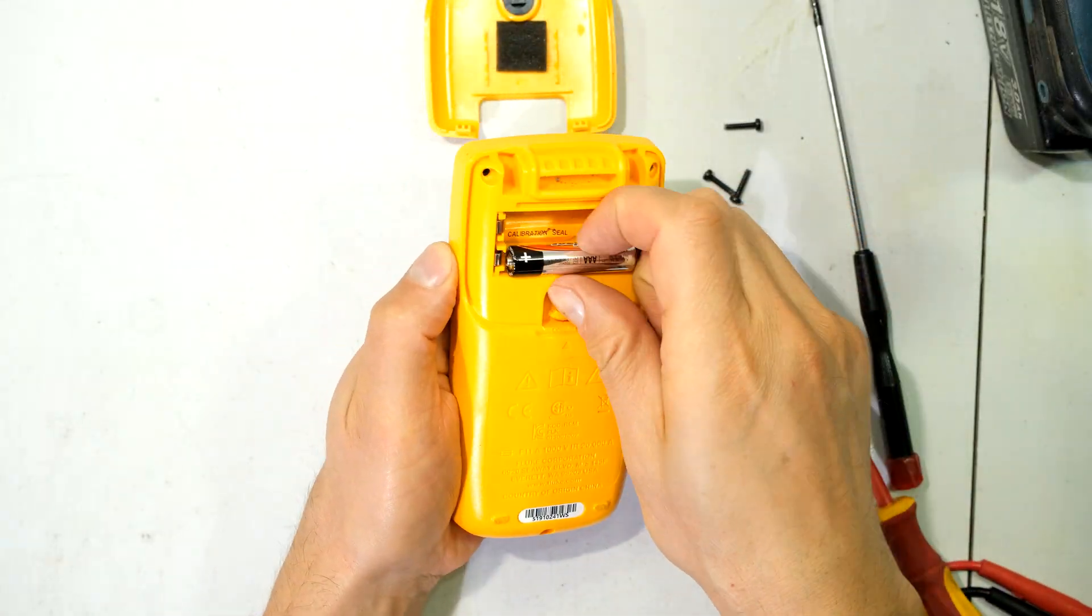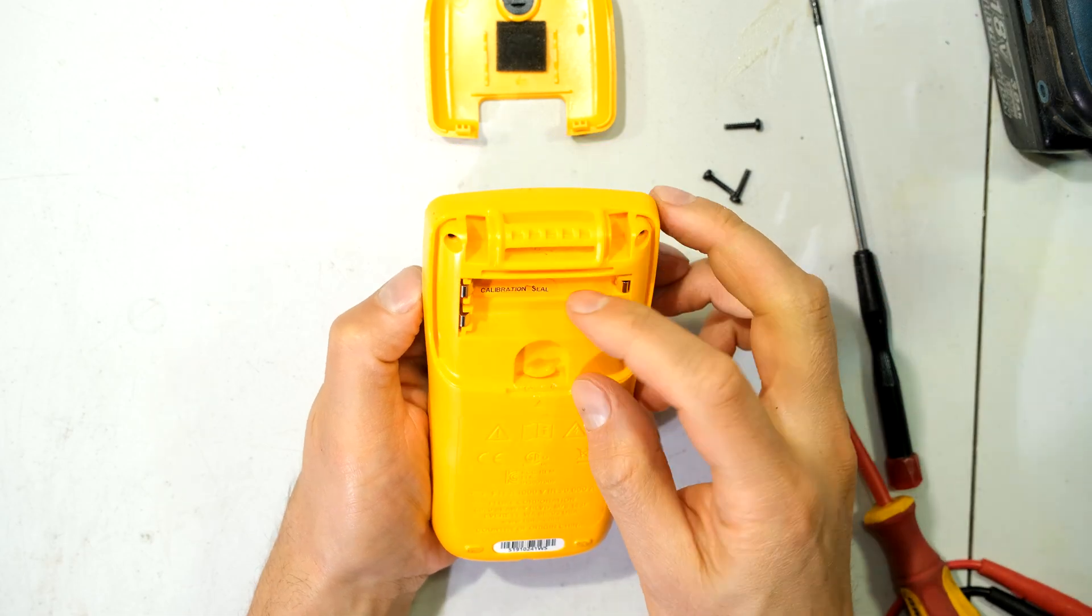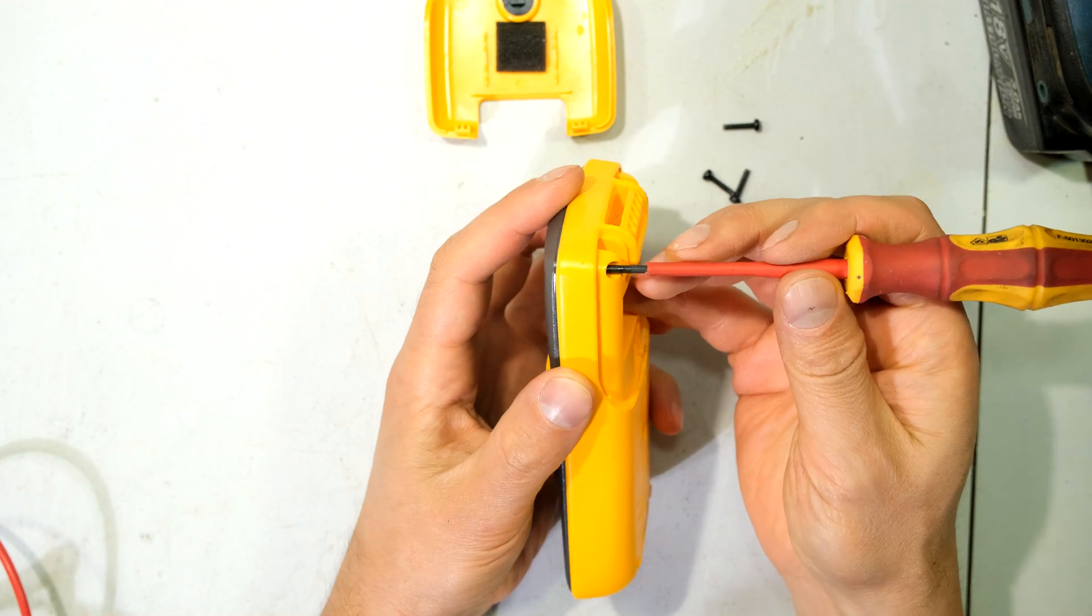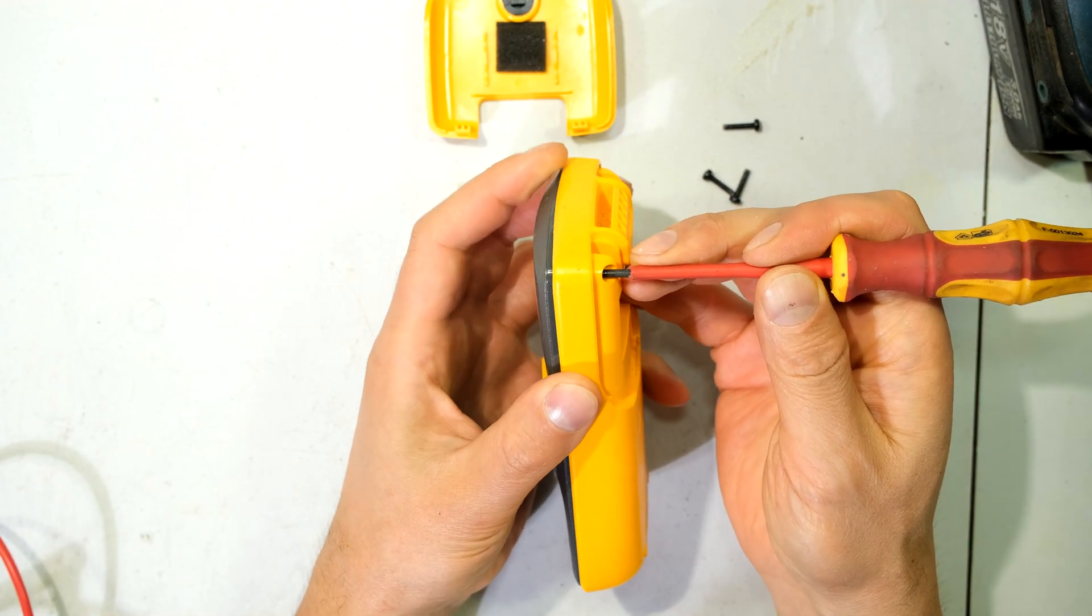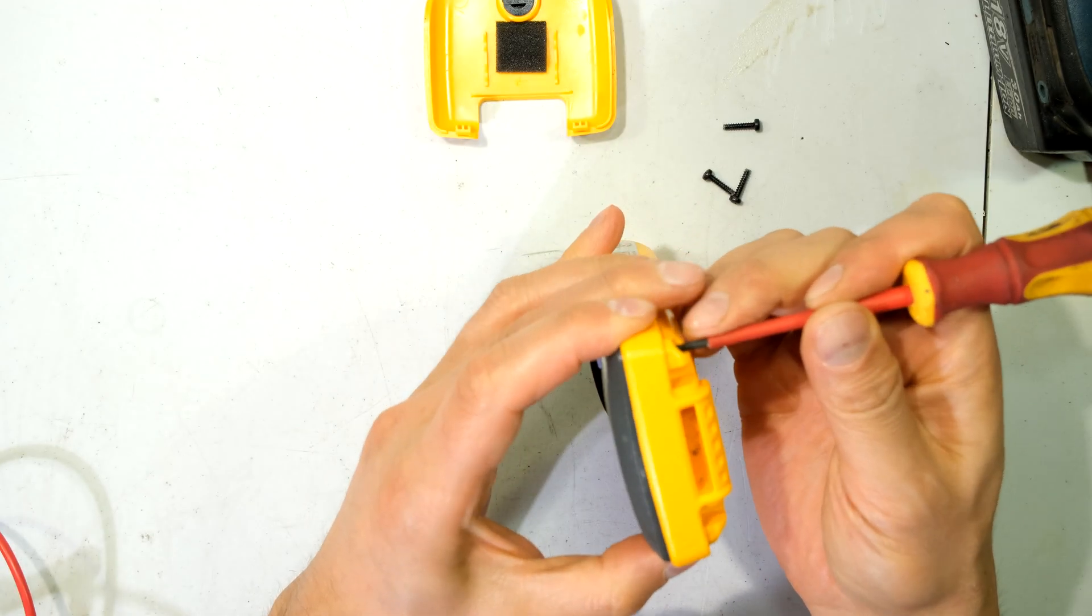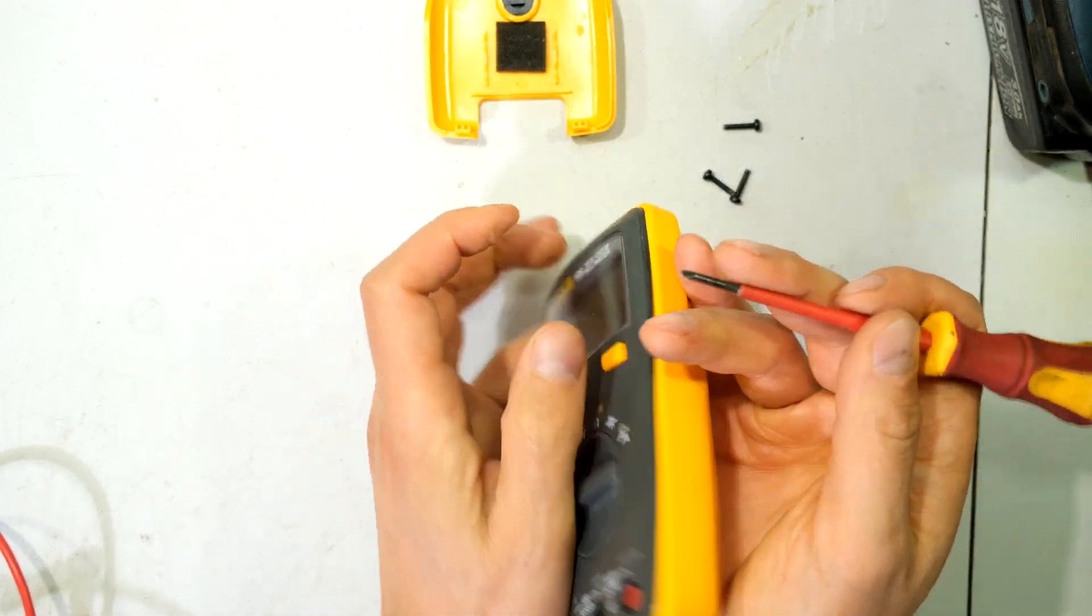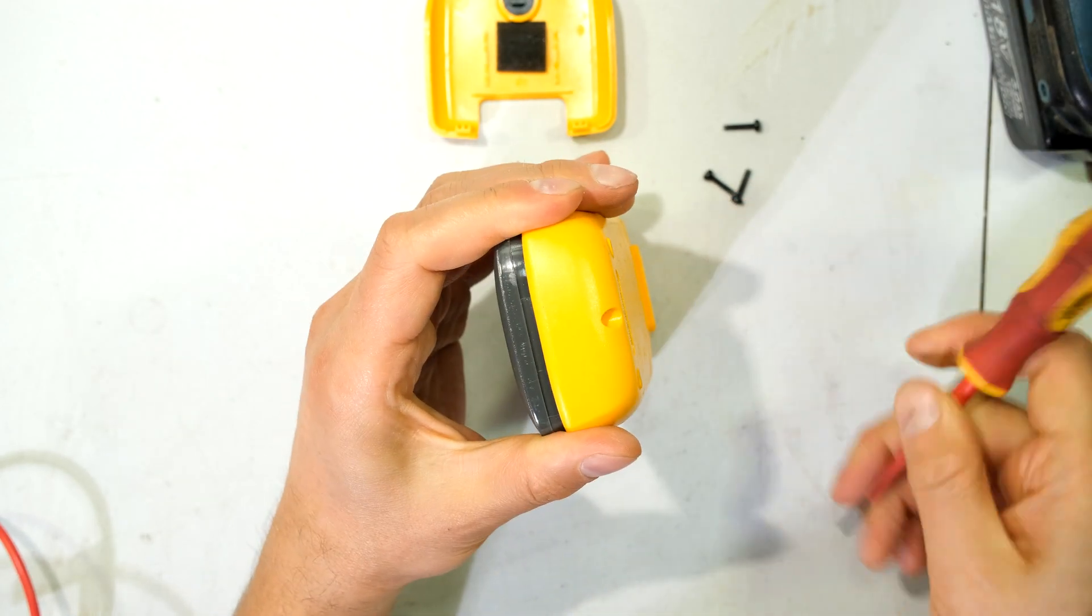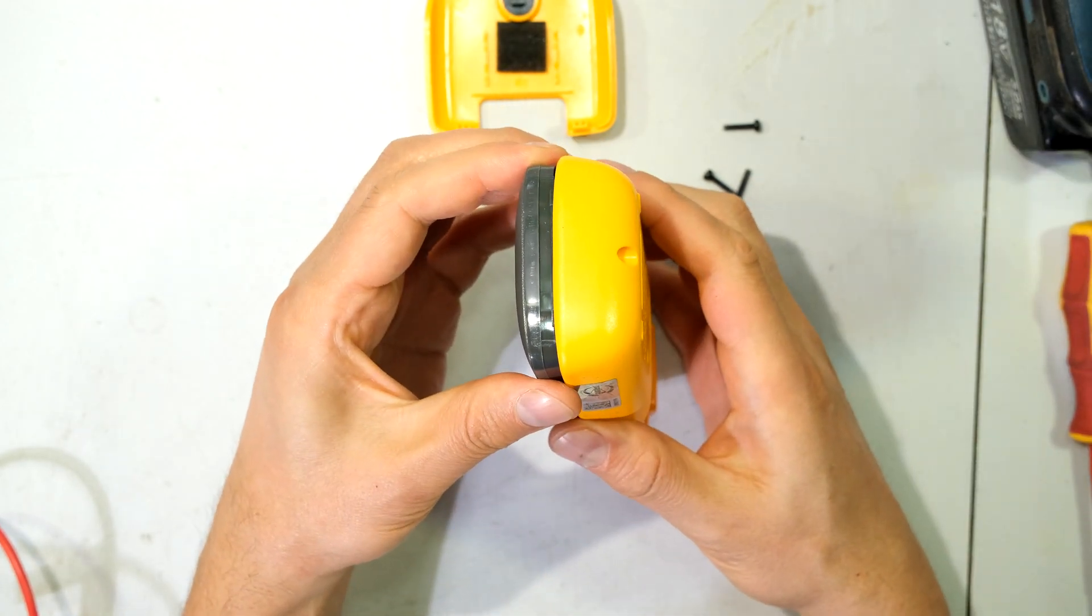I'm going to remove the batteries just so that it's easier to work with. Now what I do is take a screwdriver and just press it in here to separate the side. There you can see it has lifted a bit and I'm just going to press here and depress here and there we can see the sides are separating.